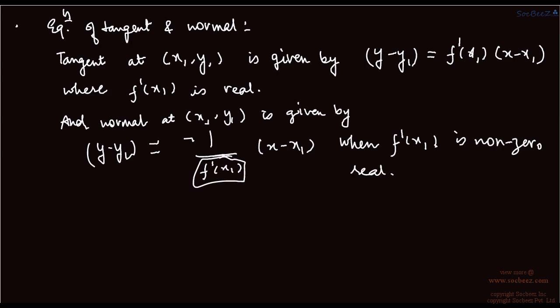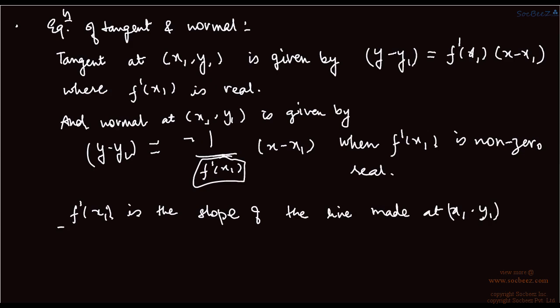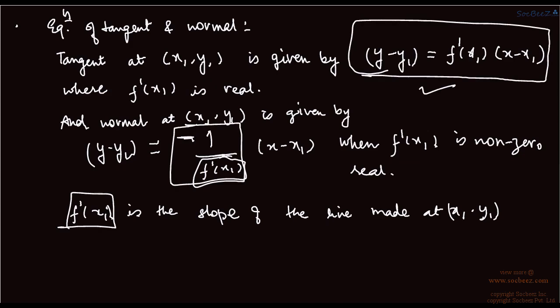f-dash(x1) is the slope of the line made at (x1, y1). So y minus y1 equals f-dash(x1) times X minus x1 is the tangent. If you take the reciprocal of it and put a negative sign in front, it becomes the slope of a normal. For tangent you use f-dash(x1); for normal you use minus 1 by f-dash(x1).